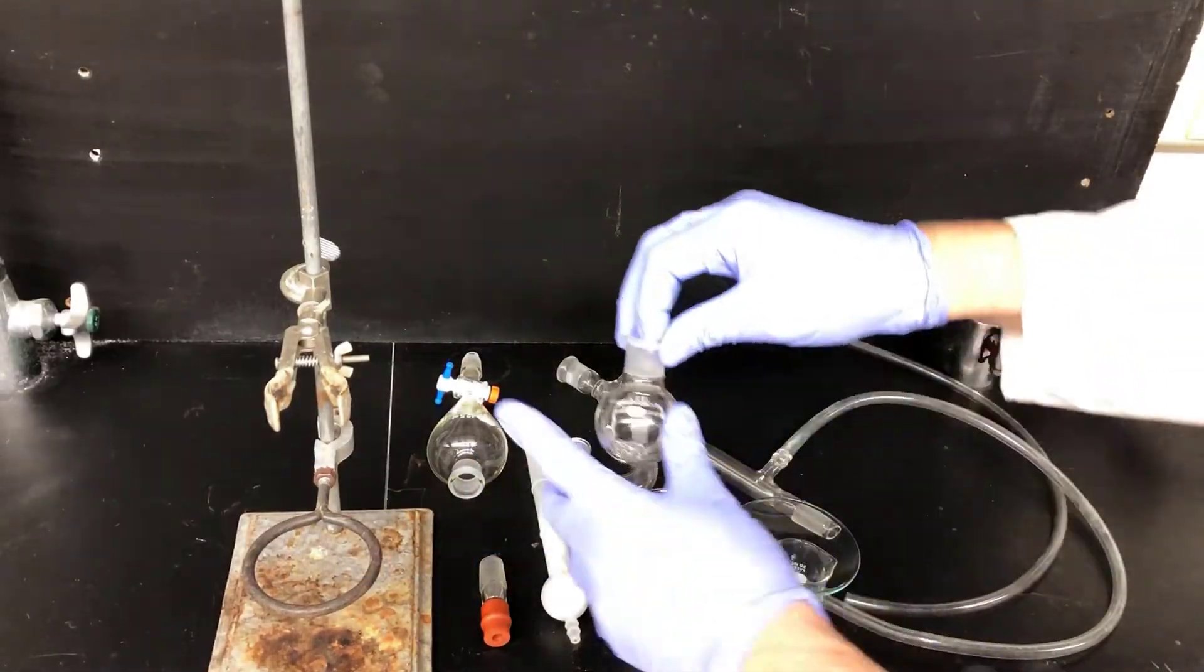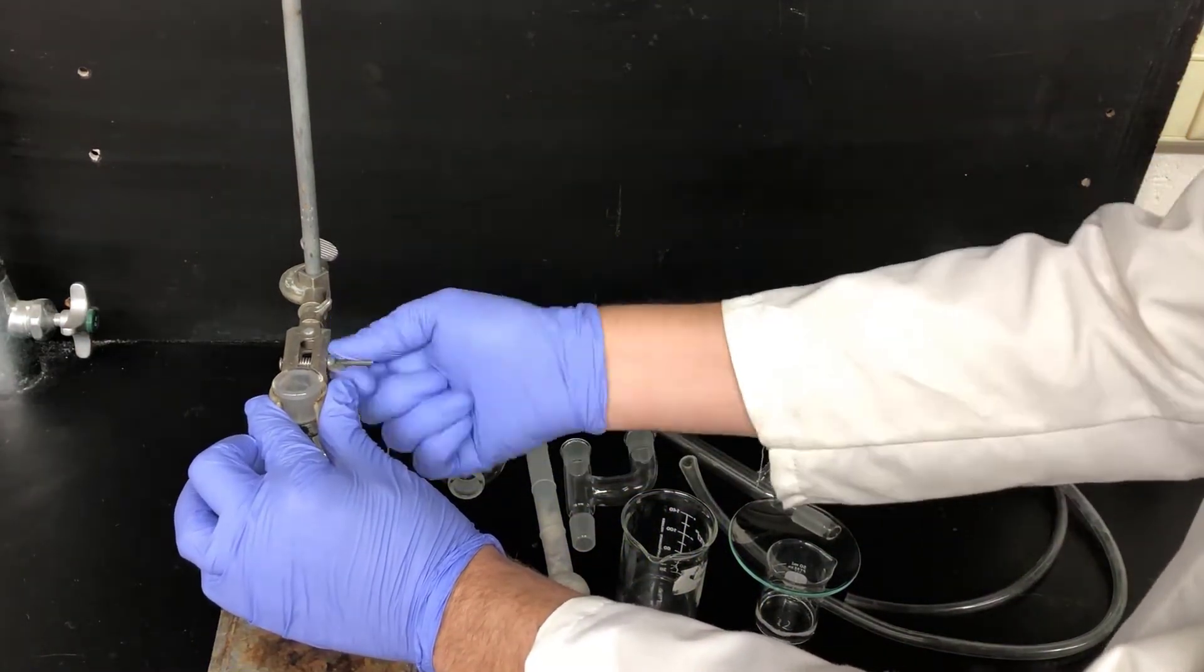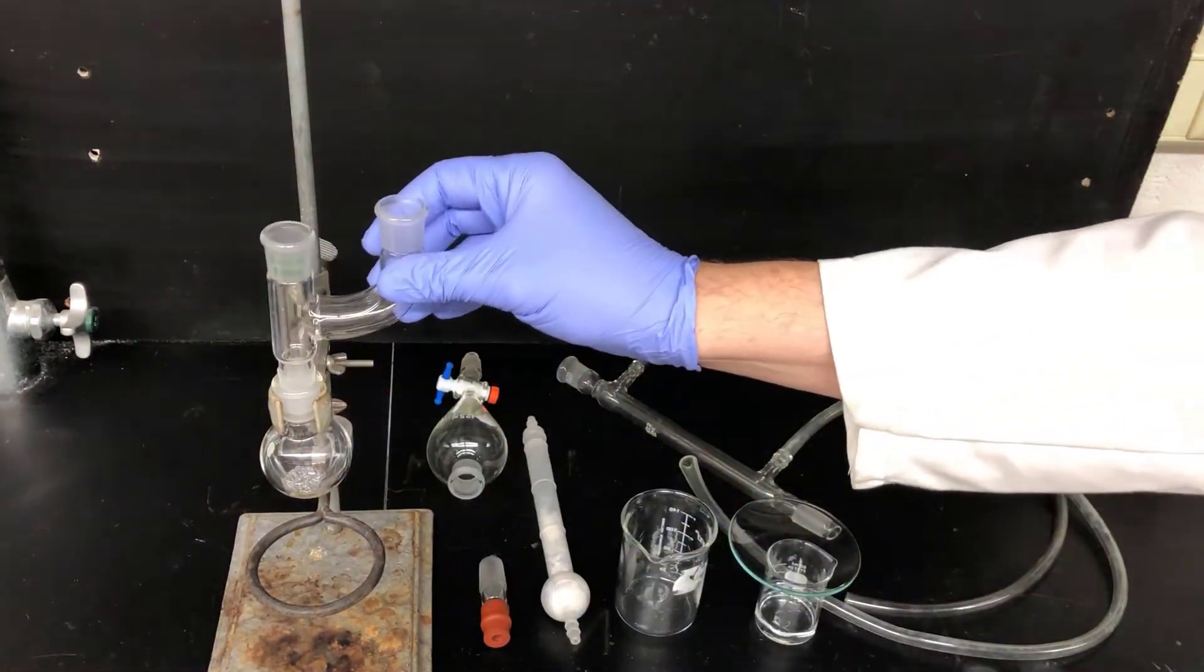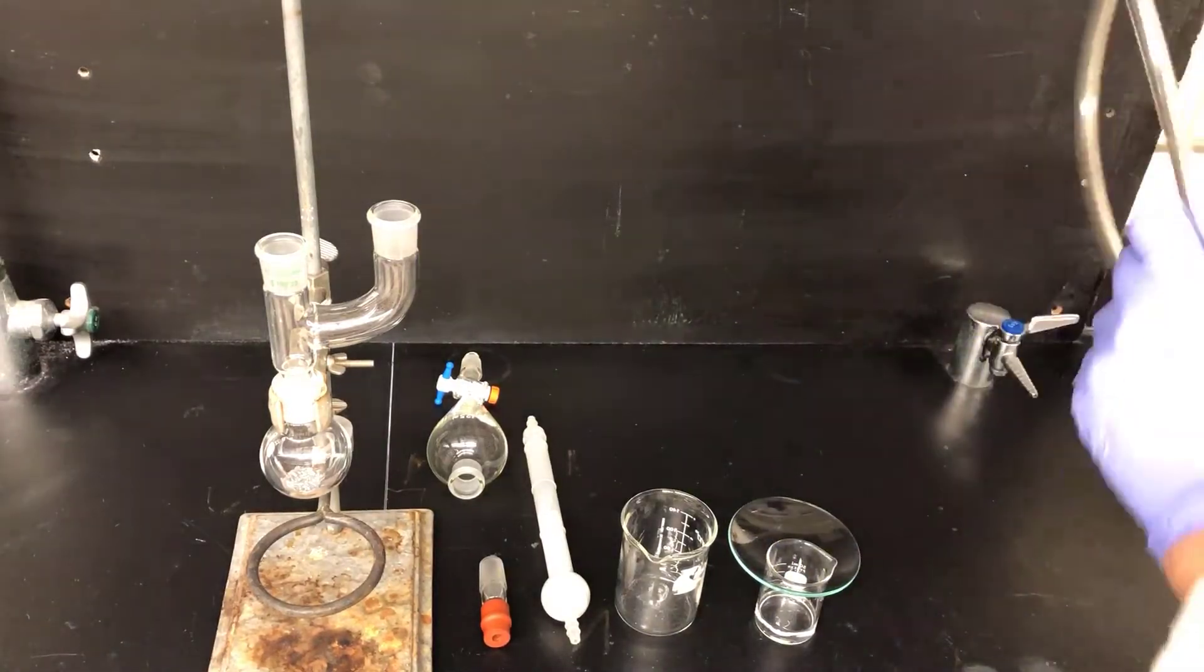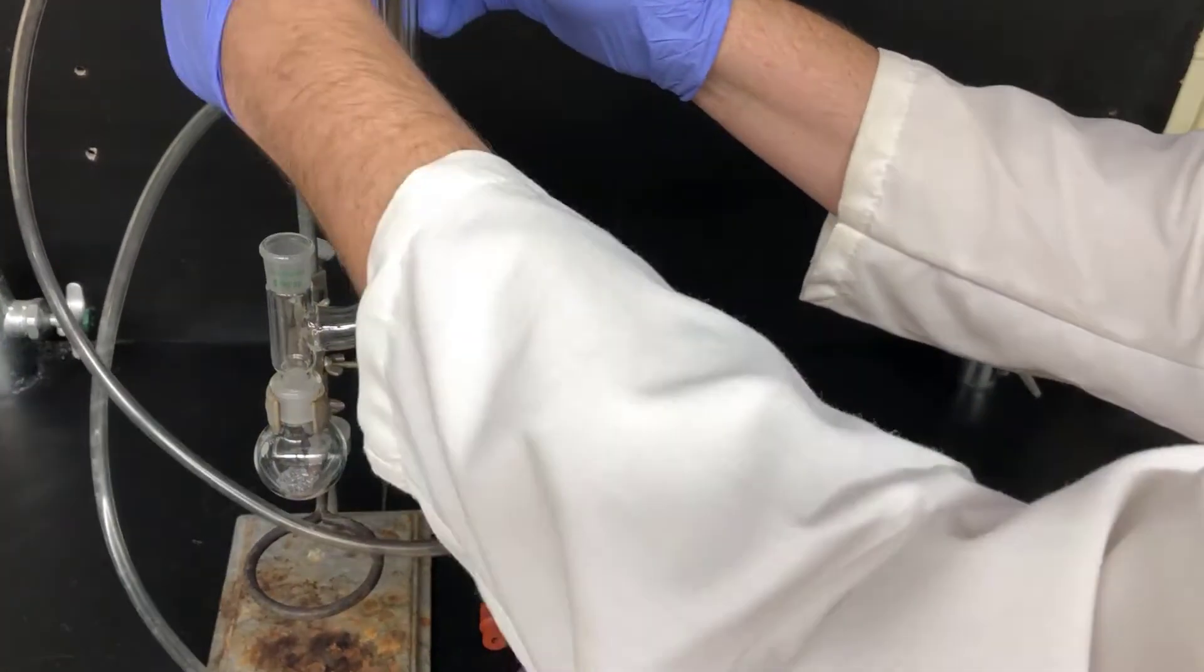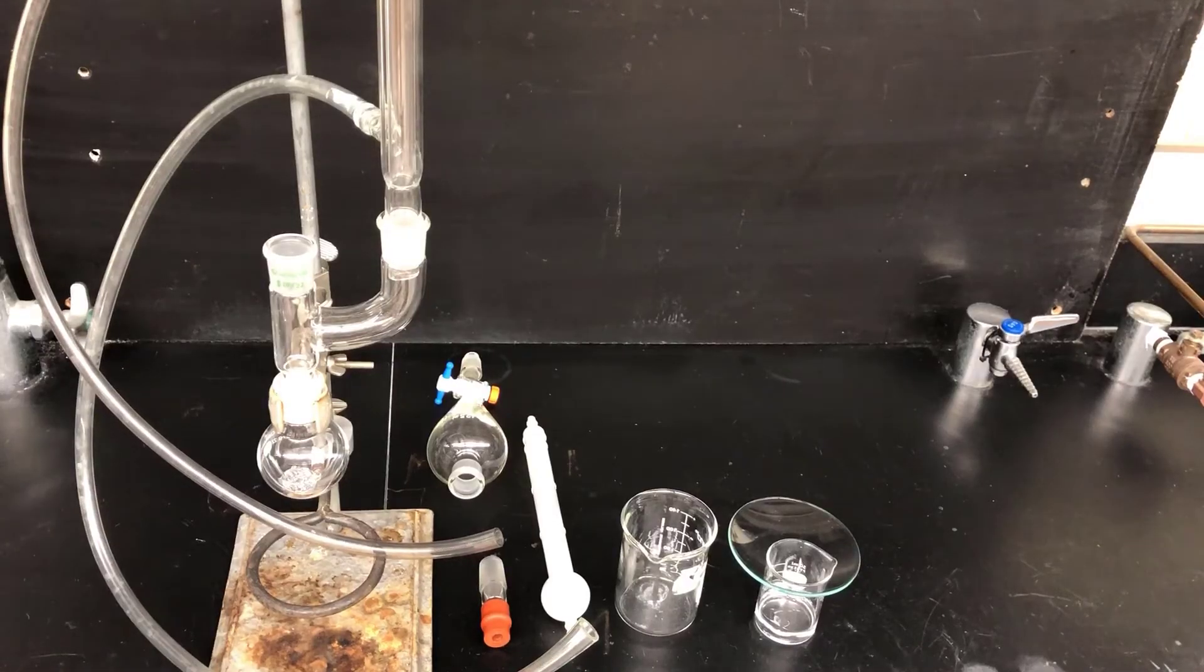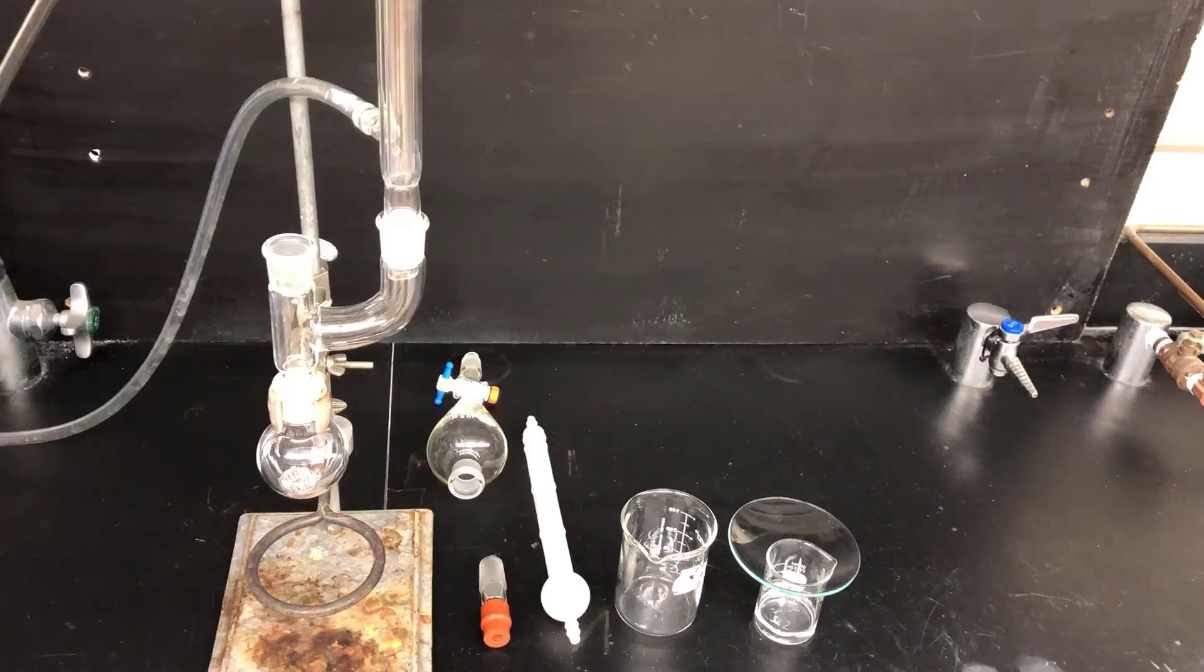Now it's time to assemble the reaction apparatus. I'll start by clamping the flask with the magnesium to a ring stand. Then I'll take a U-shaped adapter, this is often called a Claisen adapter, and I'll put that into the flask. This will adapt the flask to allow us to plug in two things. One of the things I'll plug in is a condenser, and I'll stick that into the hole that's offset. Then I'll clamp the condenser to the ring stand to stabilize the apparatus. The bottom hose of the condenser is the water inlet, that goes to the faucet. And the top hose of the condenser is the water outlet, that goes to the drain.